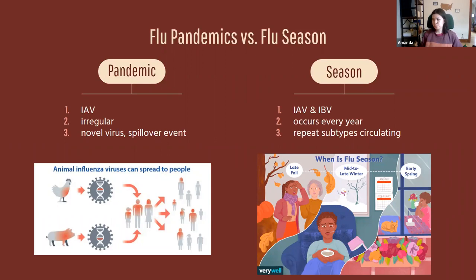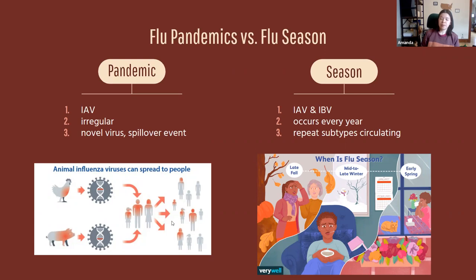Flu seasons versus flu pandemics: flu season repeats every year in a very predictable cycle. We know which viruses are circulating — their strains will be slightly different due to antigenic drift, but we know influenza A and B are circulating, primarily H1N1 and H3N2. Whereas with pandemics, they're primarily caused by influenza A viruses, are very irregular, and usually caused by a novel virus that spills over into the population and spreads very rapidly.